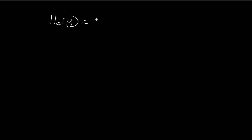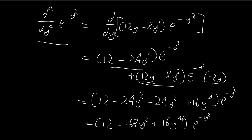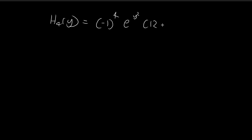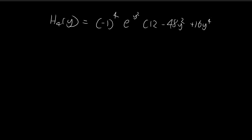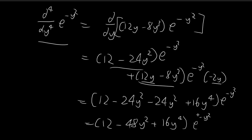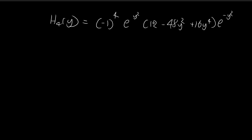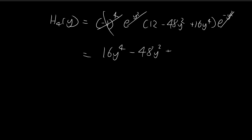Using this we can find H4 of y. Recalling the formula, this equals negative 1 to the power of 4, times e to the power of y squared, multiplied by the fourth derivative: 12 minus 48y squared plus 16y to the fourth, times e to the power of negative y squared. The exponentials cancel, and negative 1 to the power of 4 equals 1, so H4 of y equals 16y to the fourth minus 48y squared plus 12. This is the fourth Hermite polynomial.